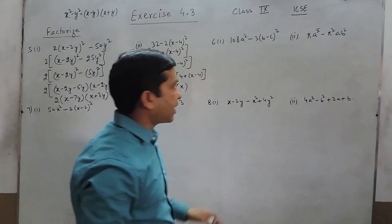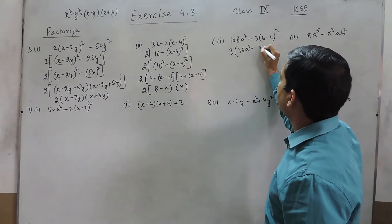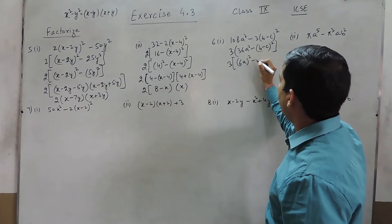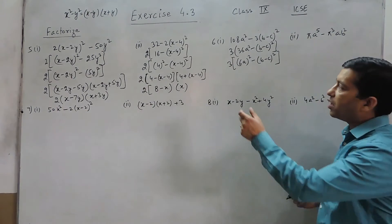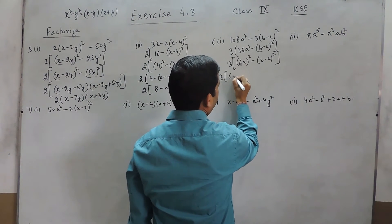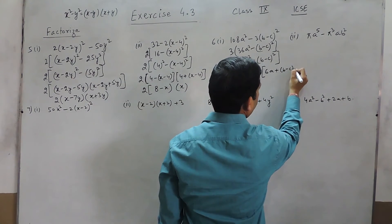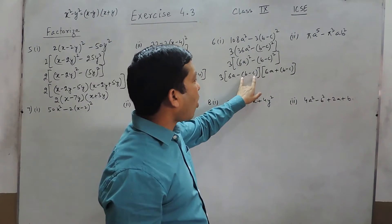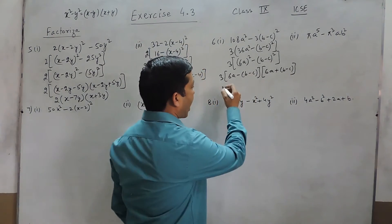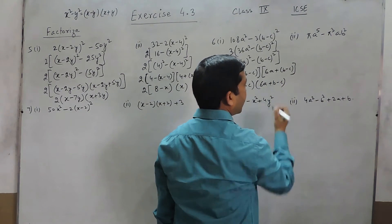This can also be solved another way by expanding fully first and then factoring, but this is the easier method. If we take 3 as common, we get 36a² - (b - c)². With 3 common, it becomes (6a)² - (b - c)², so using the identity it is 3 × (6a - (b-c)) × (6a + (b-c)). It is always better to keep terms in brackets because of negative signs, so the answer is (6a - b + c)(6a + b - c).